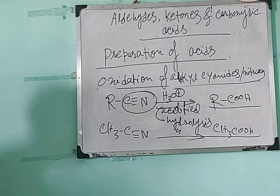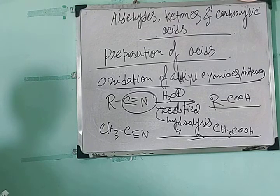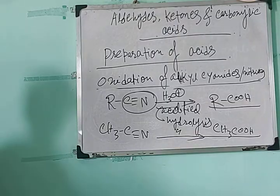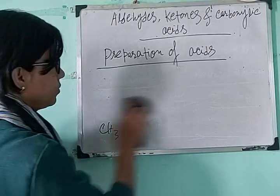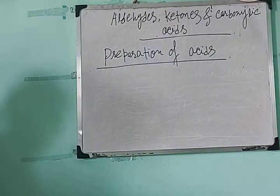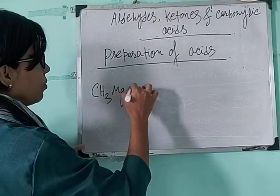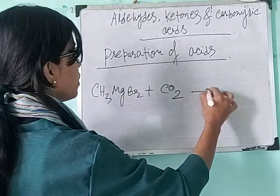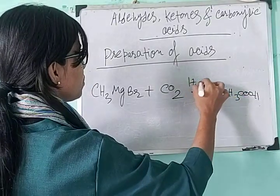Next is from Grignard reagent. Grignard reagent can react with carbon dioxide gas. Carbon dioxide can act as a source of the COOH group. So when Grignard reagents react with carbon dioxide gas, we will get a carboxylic acid. For example, methylmagnesium bromide reacting with carbon dioxide gas will give CH3COOH after the hydrolysis step.